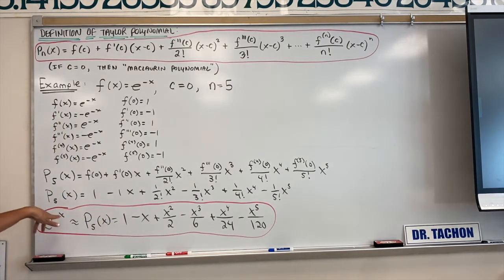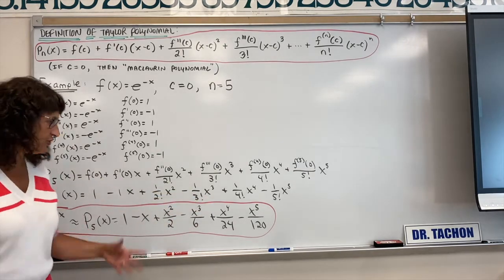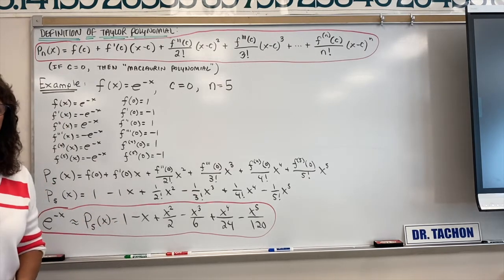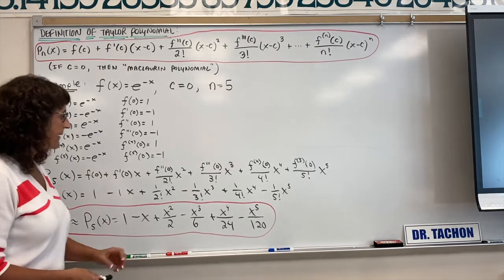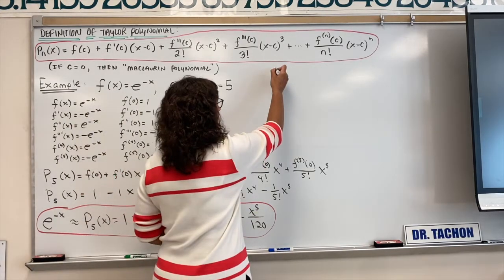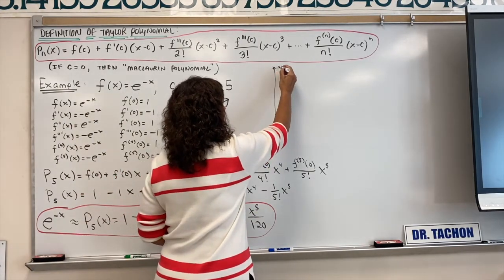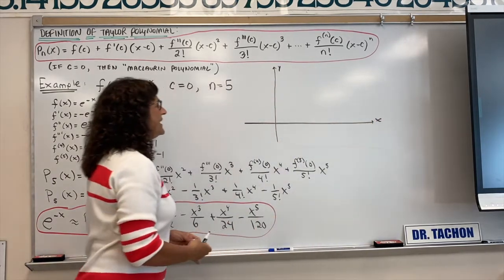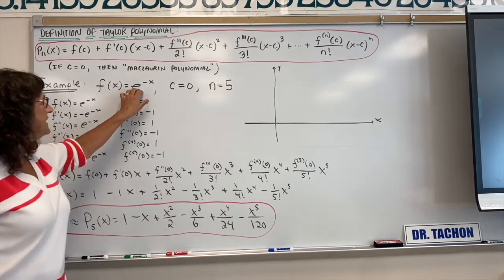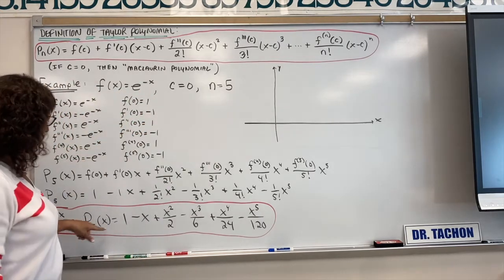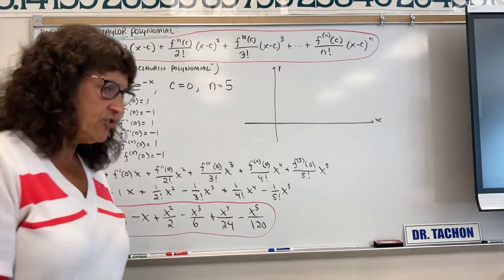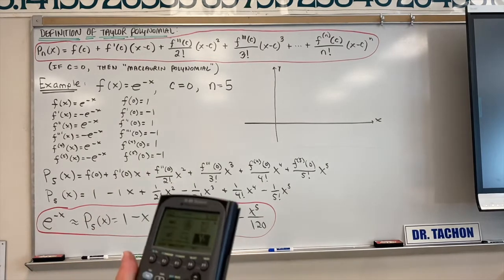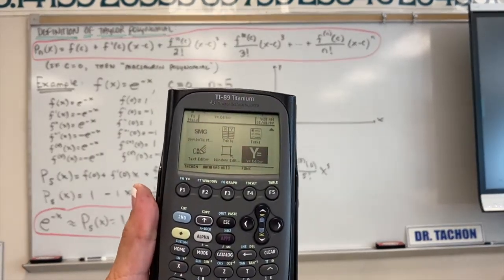To exactly cover e to the negative x, you would need infinitely many terms. So let's look at a graphing calculator and see what this does. I'm going to sketch the graph over here — here's my y-axis, here's my x-axis. Let's sketch both e to the negative x and the polynomial we generated. If you have a graphing calculator, take a look with me.